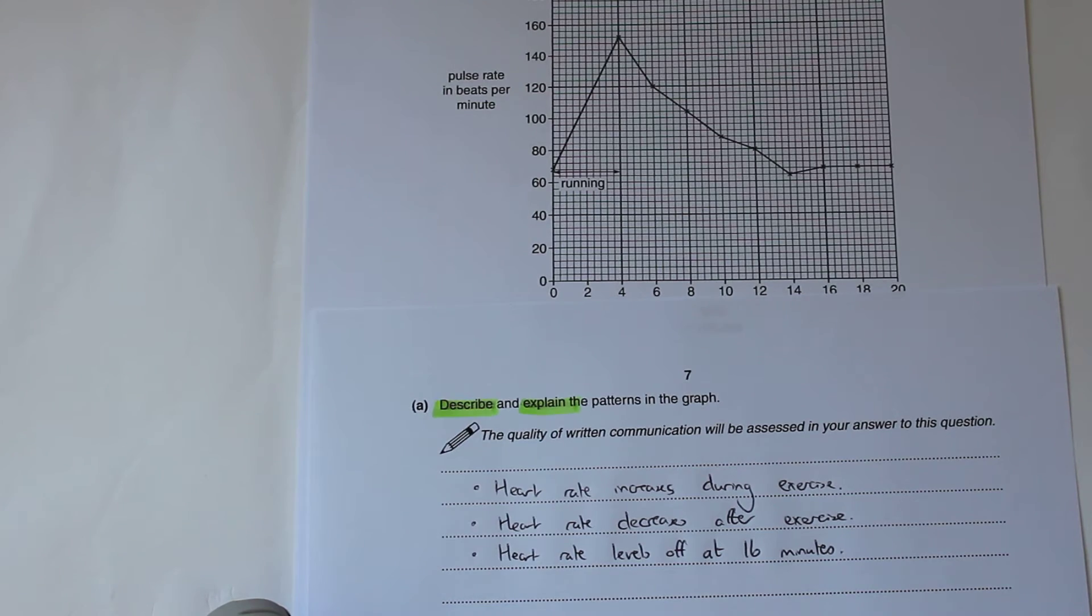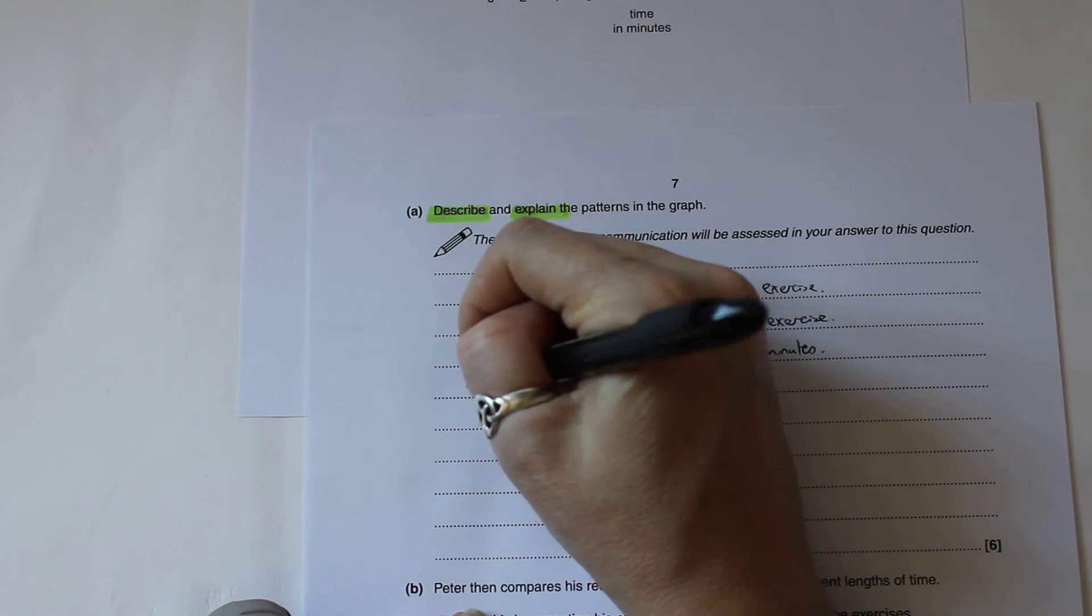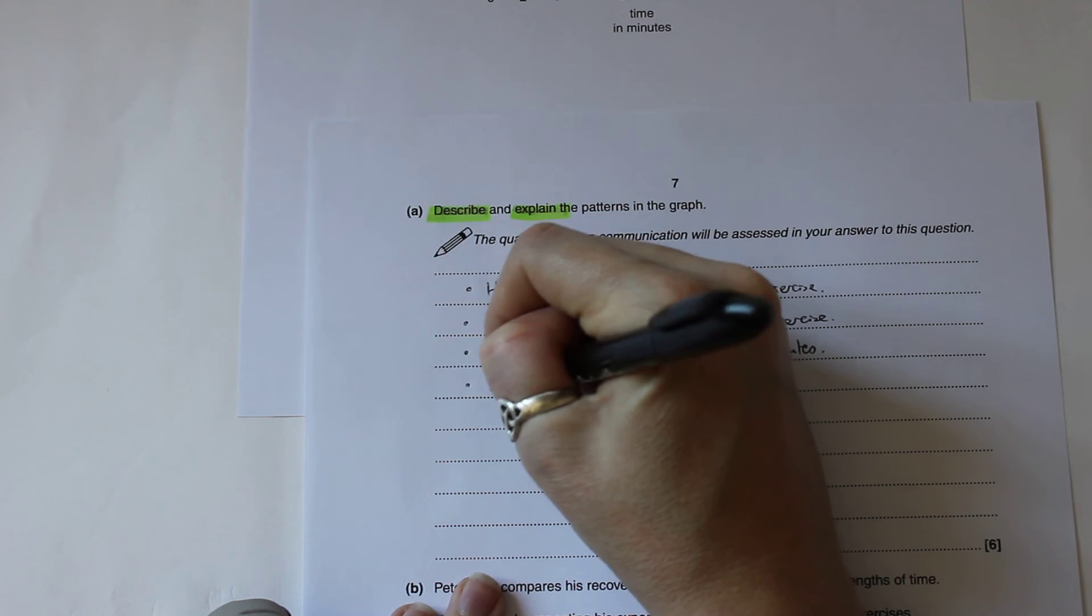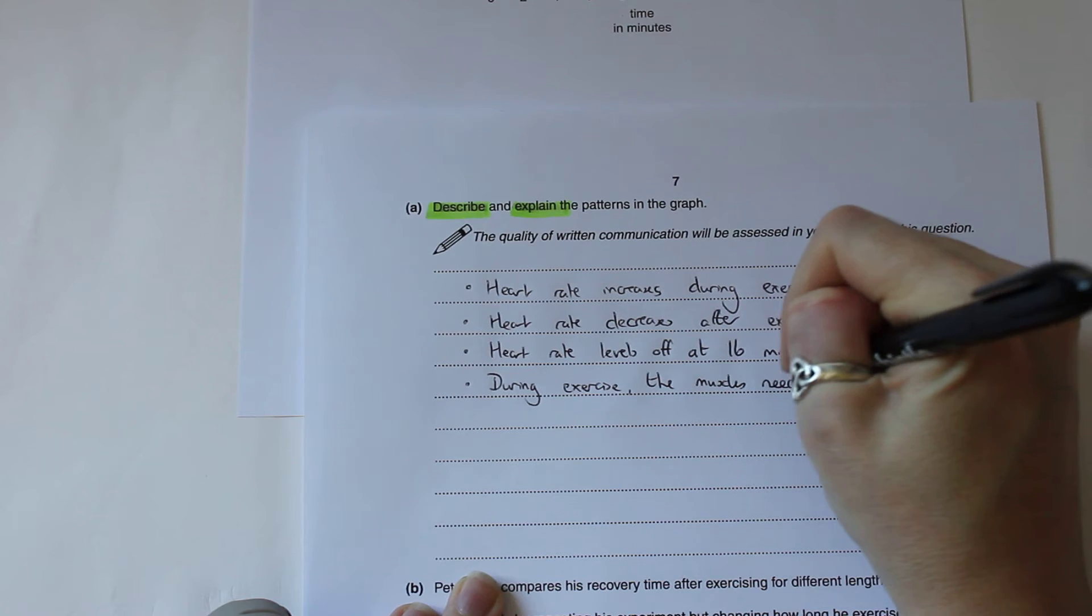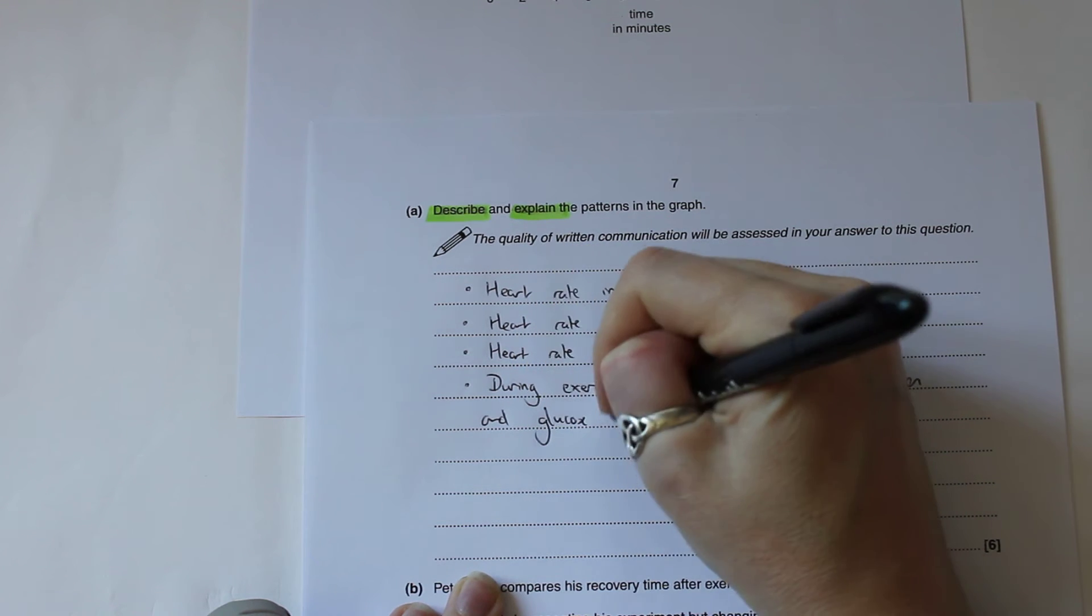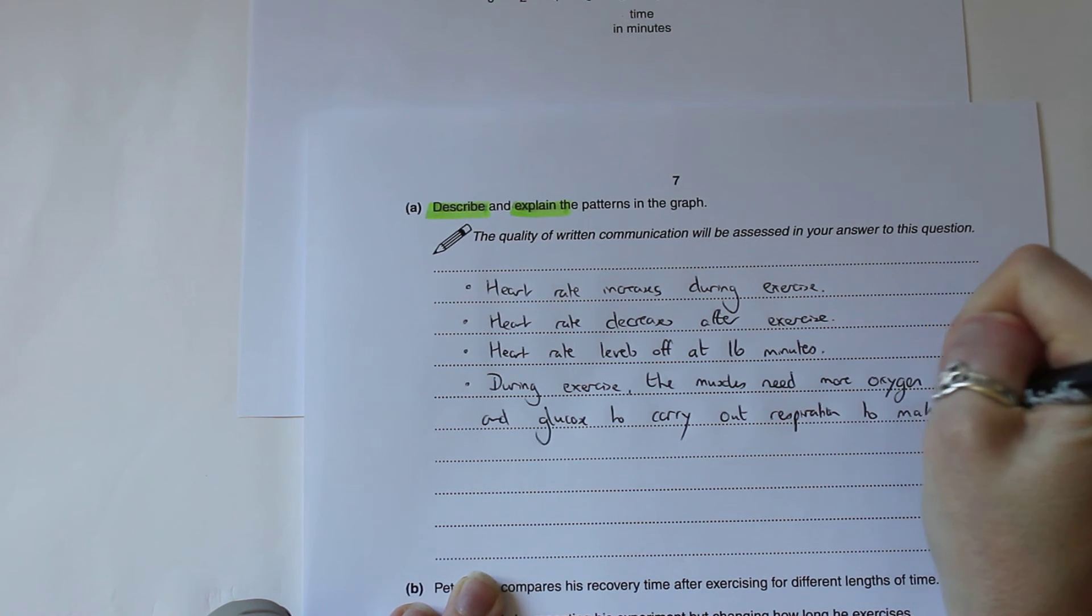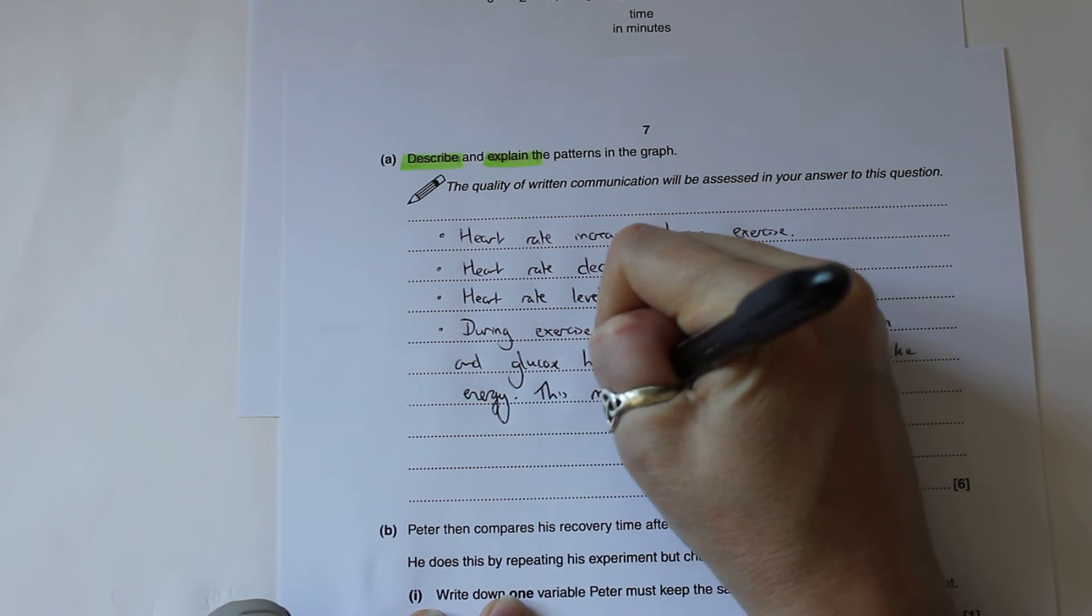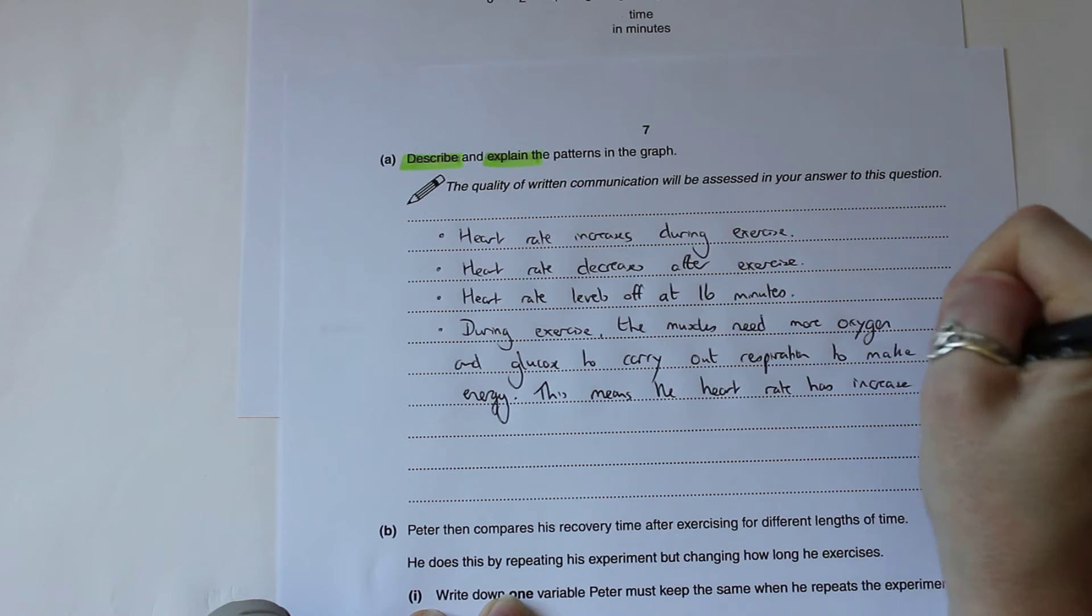That gives us the full explanation of the actual graph itself. Now we've got to explain the reason for each of those sections. First of all we need to say why the heart rate increases during exercise. During exercise the muscles need more oxygen and glucose to carry out respiration to make energy. This means the heart rate has to increase to pump more blood.